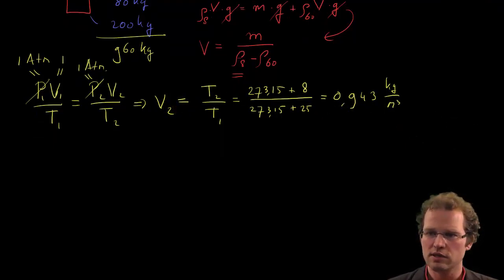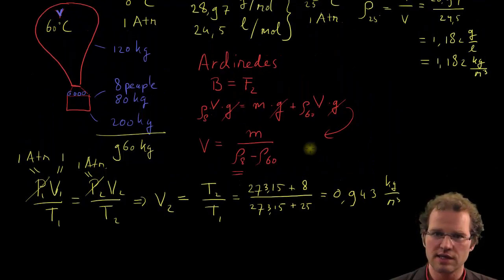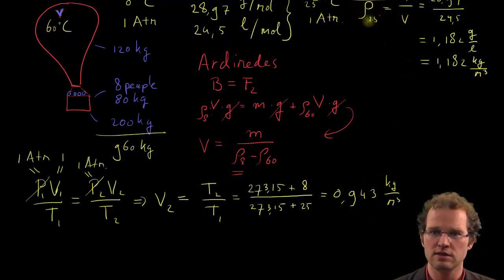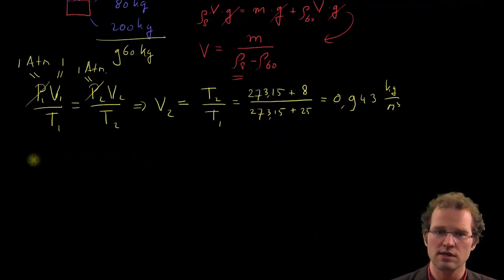Now we have to think a little bit. The air density, density is always divided by volume, so if the volume changes with a factor, the air density is divided by the same factor. So if we need to know the air density at 8 degrees, we would start with the density of 25 degrees and divide this by the vector of the volume.